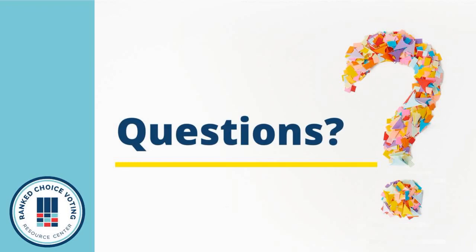I'll throw out a few questions. Karen asks: is there any thought to include info on which states have active grassroots organizations working to get RCV implemented? I can answer that a bit. We haven't thought about that specifically, but I think that's something we could consider. The best place to look for that sort of information would be somewhere like FairVote or Rank the Vote — the folks who are doing the most work with those sorts of grassroots organizations. But we will at least include links out to those places where people can find that sort of information.